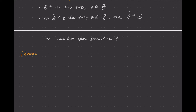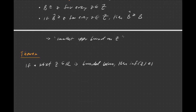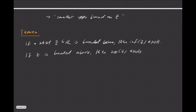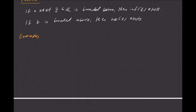A quick theorem: if a subset is bounded, then the infimum and supremum always exist. More specifically, if a subset S of R is bounded below, then the infimum of S exists; and if S is bounded above, then the supremum of S exists. Let's look at a few quick examples before we apply this to integration.